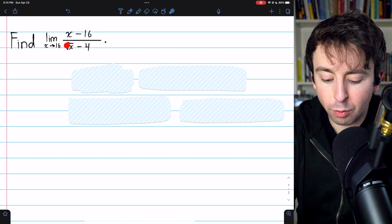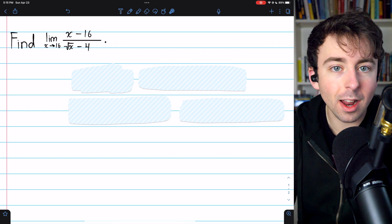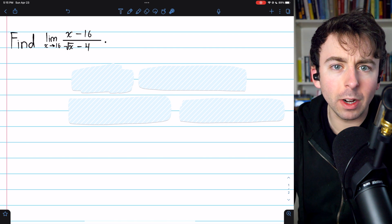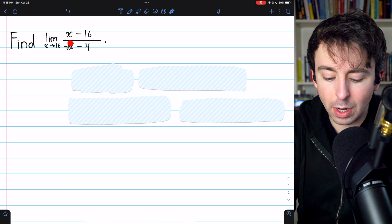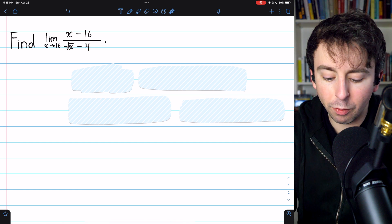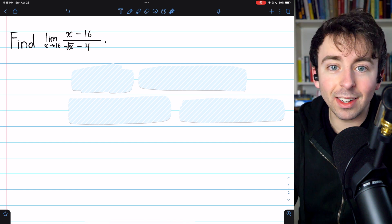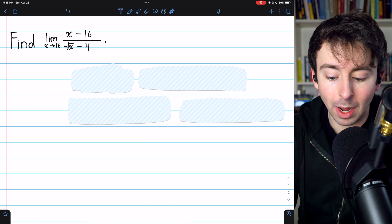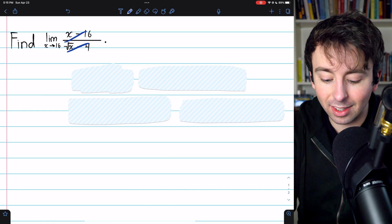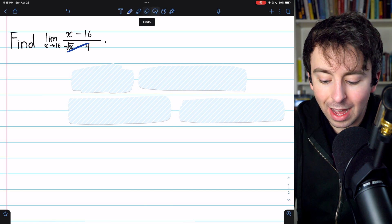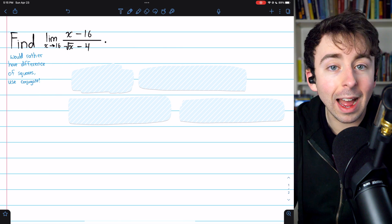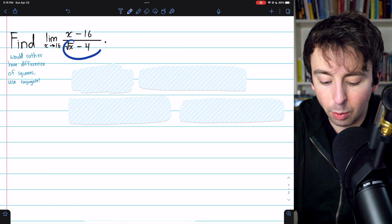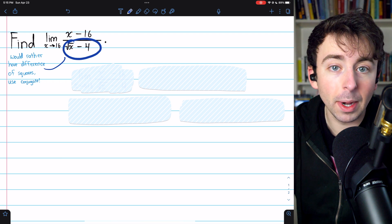In this case, we have root x minus 4 in the denominator, and it'd be much better to have the difference of the squares, because the square of root x is x and the square of 4 is 16. If we had the difference of those, x minus 16, we could cancel out with the numerator. So that's what clues us in to use the conjugate here, is that we would rather have the difference of squares for this binomial in the denominator.